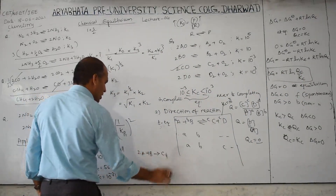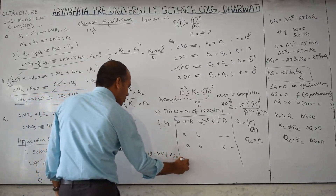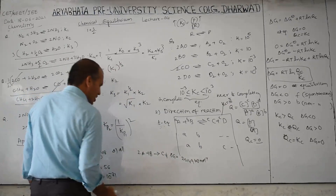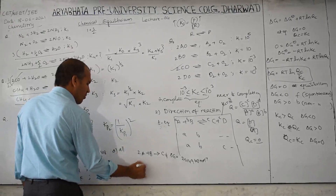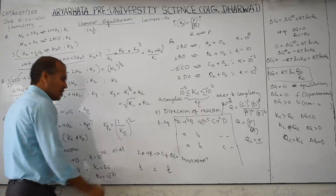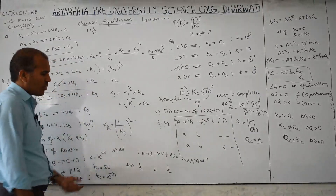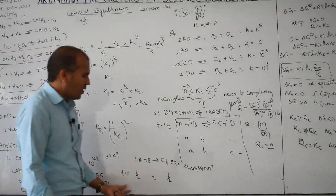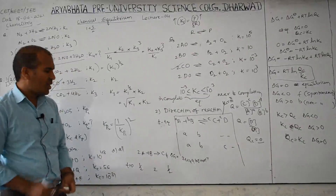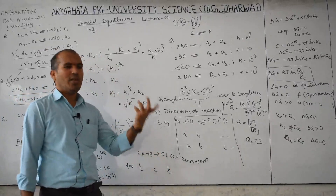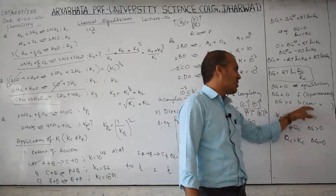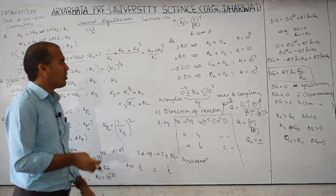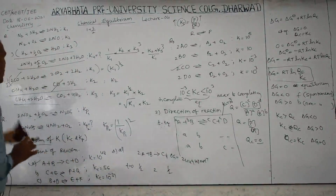For the reaction 2A + B → C, ΔG is given as some positive kilojoule per mole value. The initial concentrations are: A = 0.5, B = 0.5, C = 2, and another species = 0.5. In this case, since ΔG is positive, that directly indicates it is a backward reaction — no need to calculate Qc and Kc separately. This is the easy way to answer such questions. They will try to confuse you, but knowing ΔG > 0 means backward reaction saves calculation time in the exam.